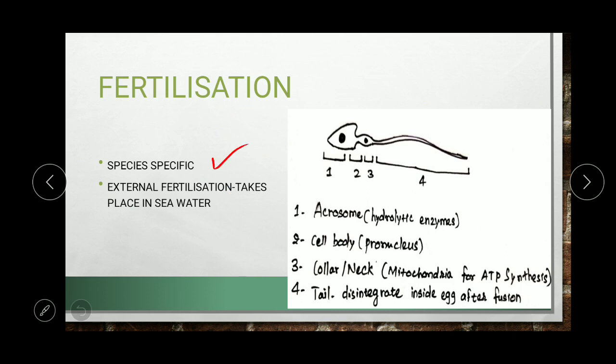The fertilization in sea urchin is species-specific. As you know from the definition of species — a group of organisms that are reproductively isolated and genetically distinct — fertilization can only take place between members of the same species. This is also external fertilization, taking place in sea water outside the body, contrary to humans where fertilization occurs inside the female body.